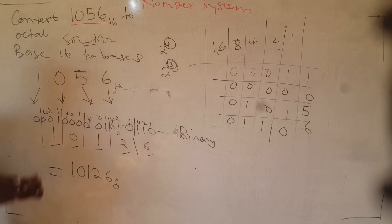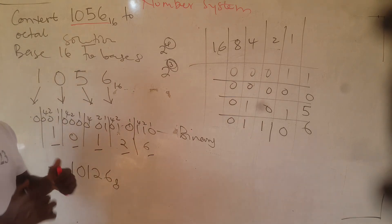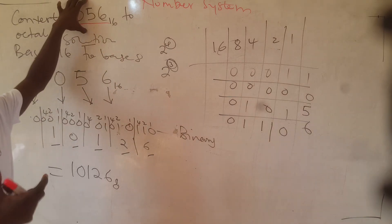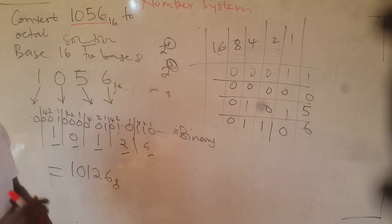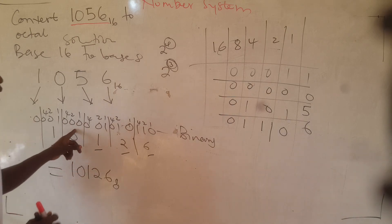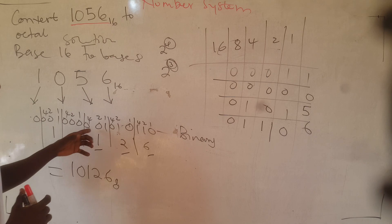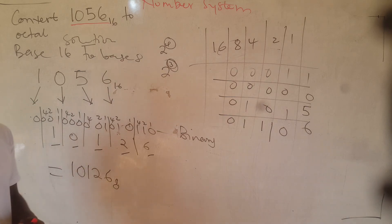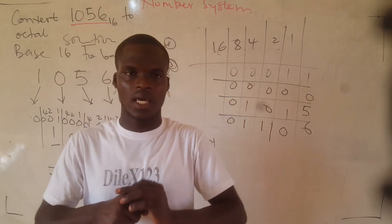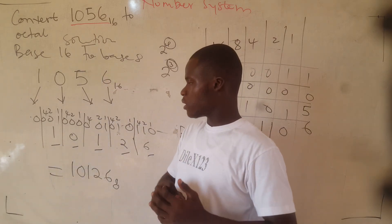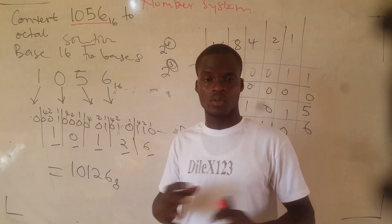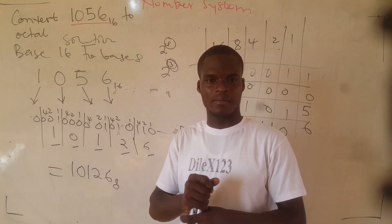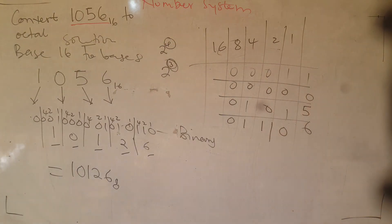So this is in base 8 — that's how we solve it. We've been able to convert 1056 in hexadecimal base 16 to base 8. We first converted to base 2, then converted from base 2 to base 8. You can use any method you like to get this answer. Thank you very much for your time. If you have any other way of solving this, put it in the comments. Thank you and bye-bye.